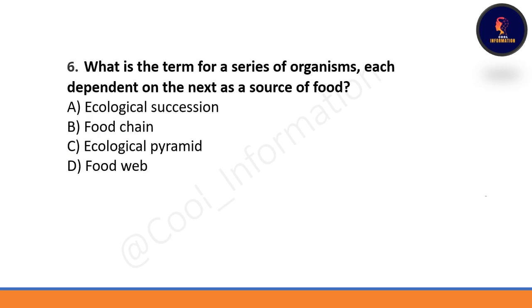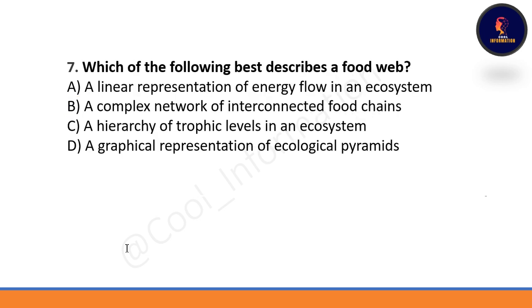What is the term for a series of organisms each dependent on the next as a source of food? Options: ecological succession, food chain, ecological pyramid, or food web. Food chain will be the correct option.